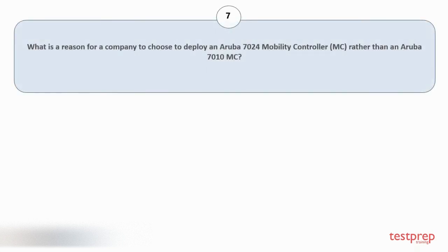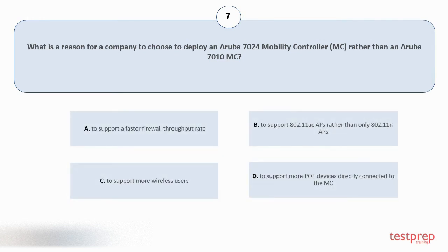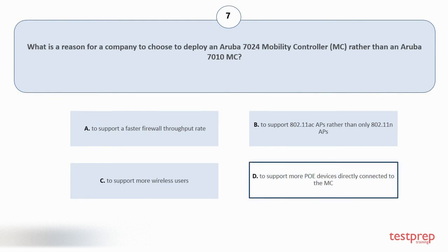Question number 7: What is a reason for a company to choose to deploy an Aruba 7020 Mobility Controller rather than an Aruba 7010 MC? Option A: To support a faster firewall throughput rate. Option B: To support more APs rather than only a limited number. Option C: To support more wireless users. Option D: To support more PoE devices directly connected to the MC. The correct answer is option D.